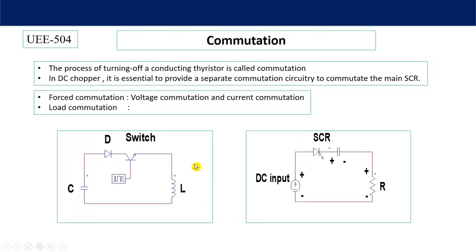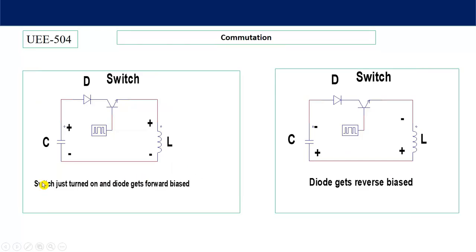Let's analyze this circuit in detail. We start with polarity positive-negative. The switch is turned on, the diode gets forward biased, and current flows. The polarity across the inductor is positive-negative, so the inductor is getting charged. After some time the polarity of the capacitor is reversed, and the inductor polarity is also reversed because the inductor has completely discharged and the capacitor is now charged. Let's see the current, inductor voltage, and capacitor voltage waveforms.